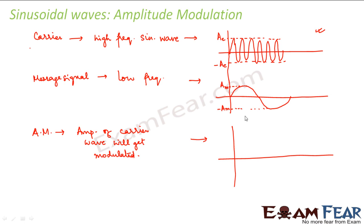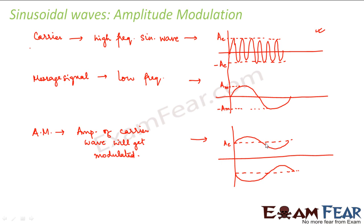Before modulation, the amplitude of the carrier wave was Ac. After modulation, the amplitude changes as per the message signal. If this is Ac, this distance becomes Am — that is the amplitude of the message signal. So the amplitude changes as per the message signal on both sides, and this is the new wave formed after amplitude modulation. The frequency still remains the same.